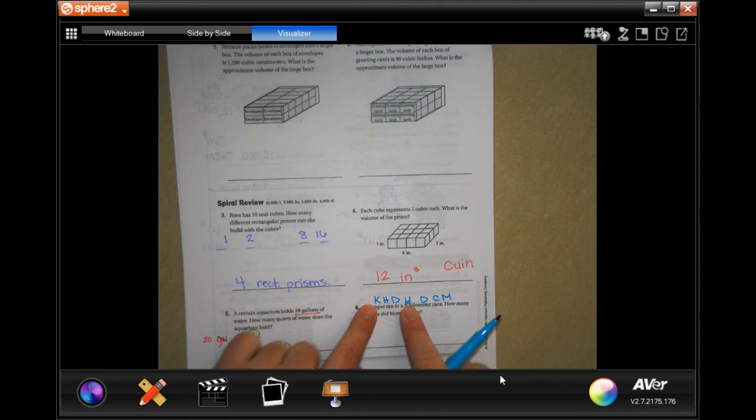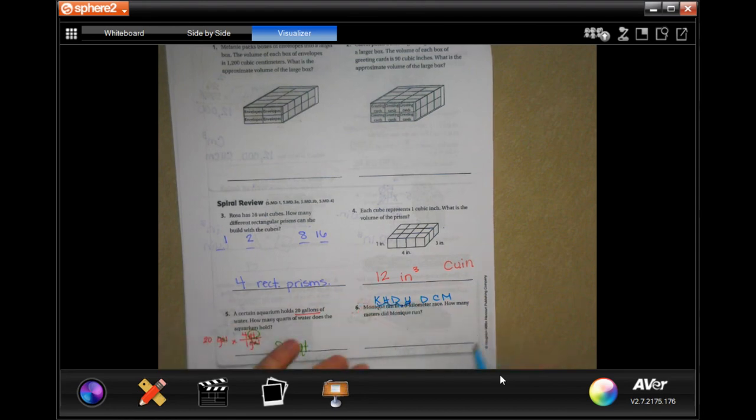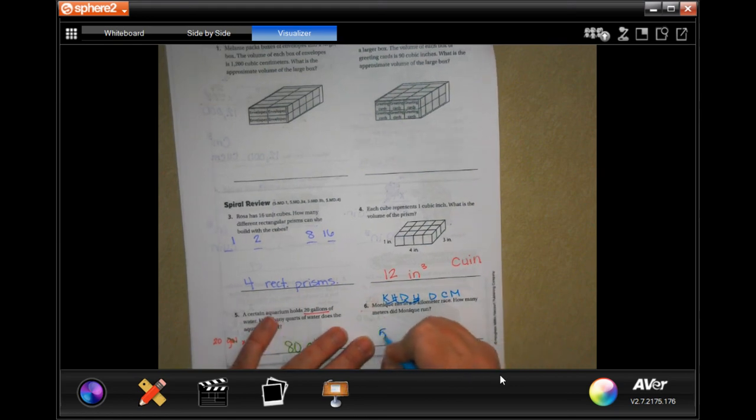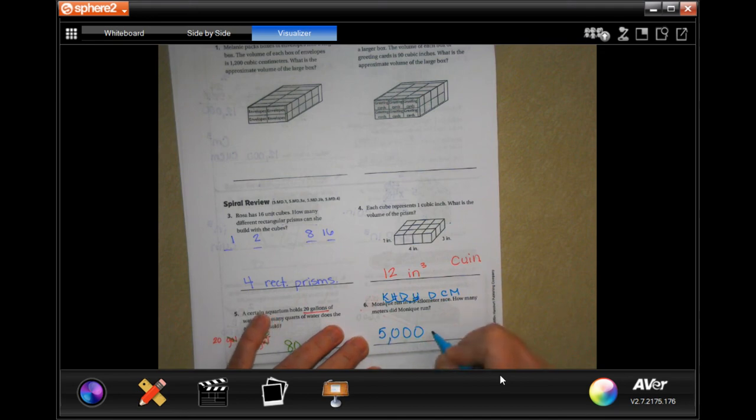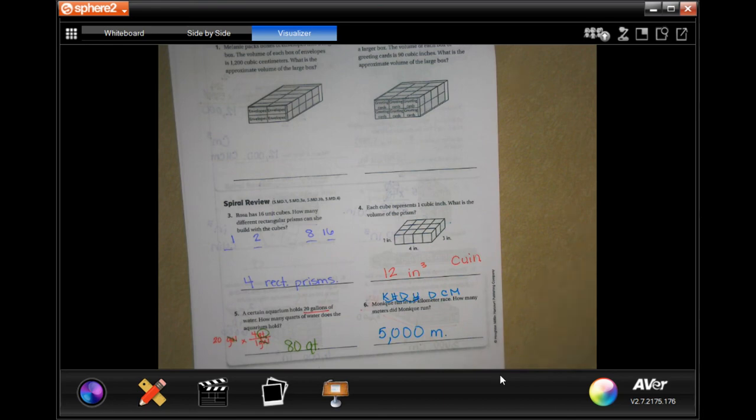So going from kilometers to meters, kilo to meters, we're going to move our decimal one, two, three times to the right. So five. And we're going to move our decimal one, two, three times, which means we're going to put in three zeros, 5,000 meters.